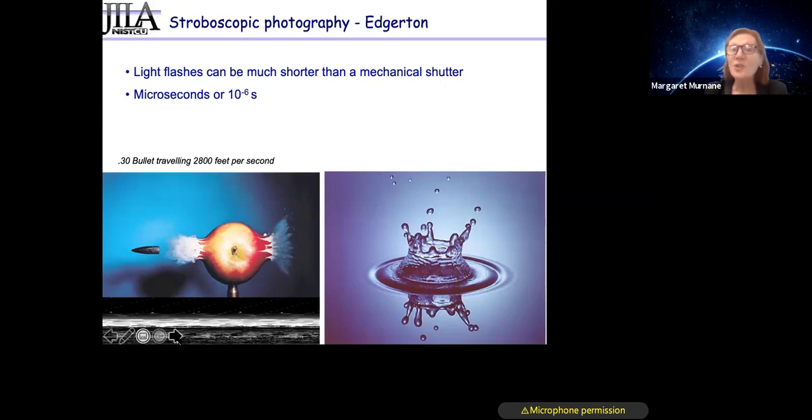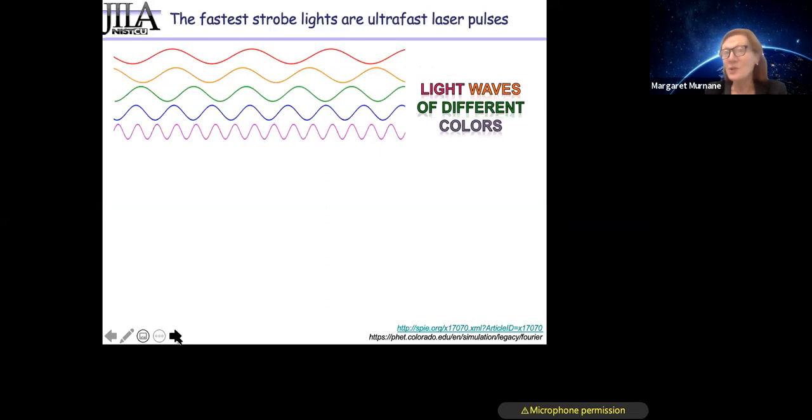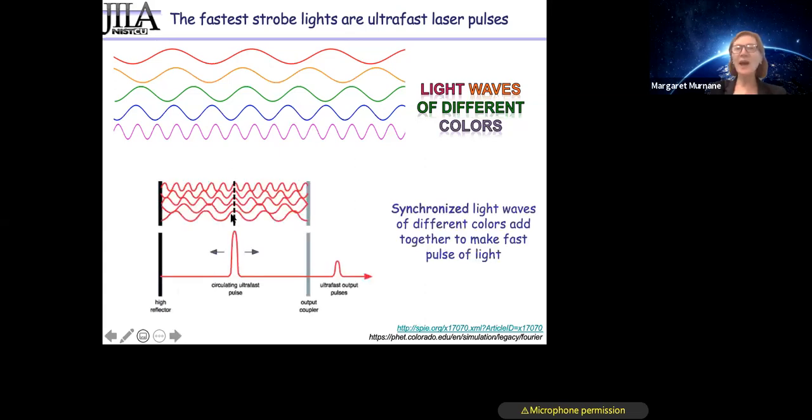But if we want to go further and really see atoms vibrating, or freeze frame some of the movies that I showed earlier, then we have to go even faster. And it turns out that to do that, the best way to do that is to use light. In particular, light waves whose phases or crests are synchronized. And this is what lasers do exquisitely. All of the waves can be synchronized exactly. And if you add a number of waves with different wavelengths, which is the same thing as saying different colors, if you add them constructively, then where they all interfere, you get a very short pulse, and where they interfere destructively, you get nothing.